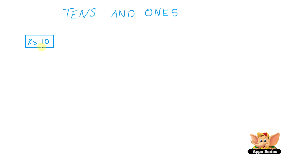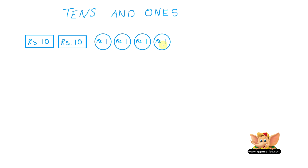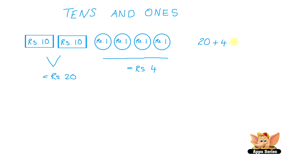Now let's try a few examples the other way around. I'm going to draw the amount of money and you have to tell me how much it sums up to. How much is this? We have two 10 rupee notes here, which equals rupees 20, and we have four 1 rupee coins here, which equals rupees 4. So that's 20 plus 4 equals rupees 24.